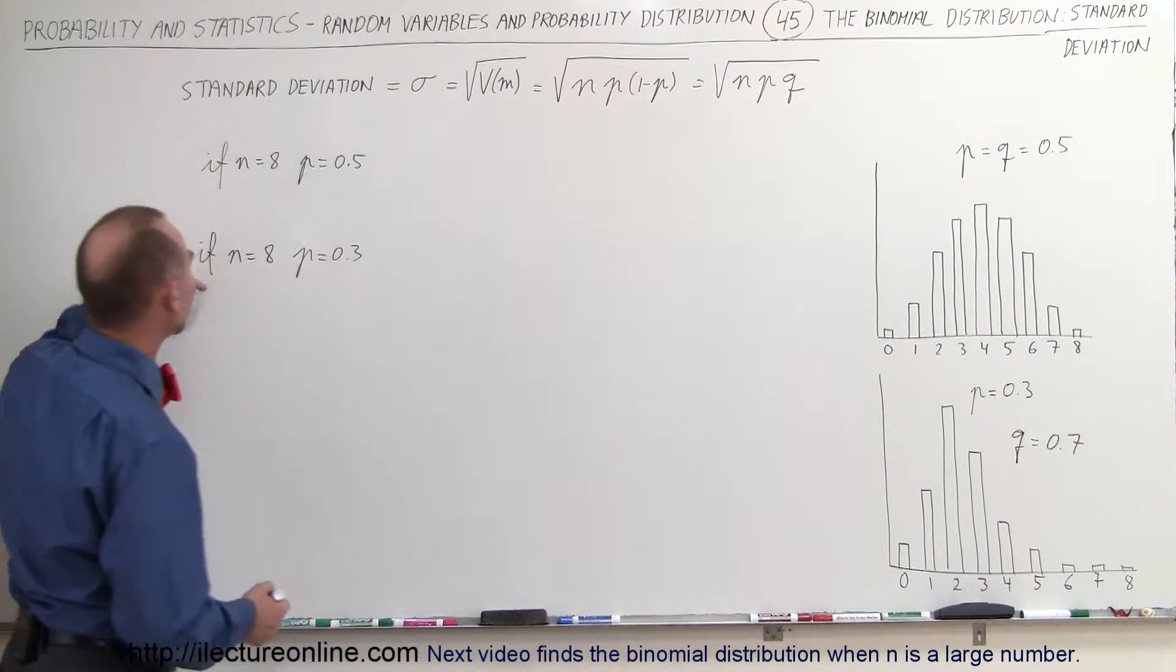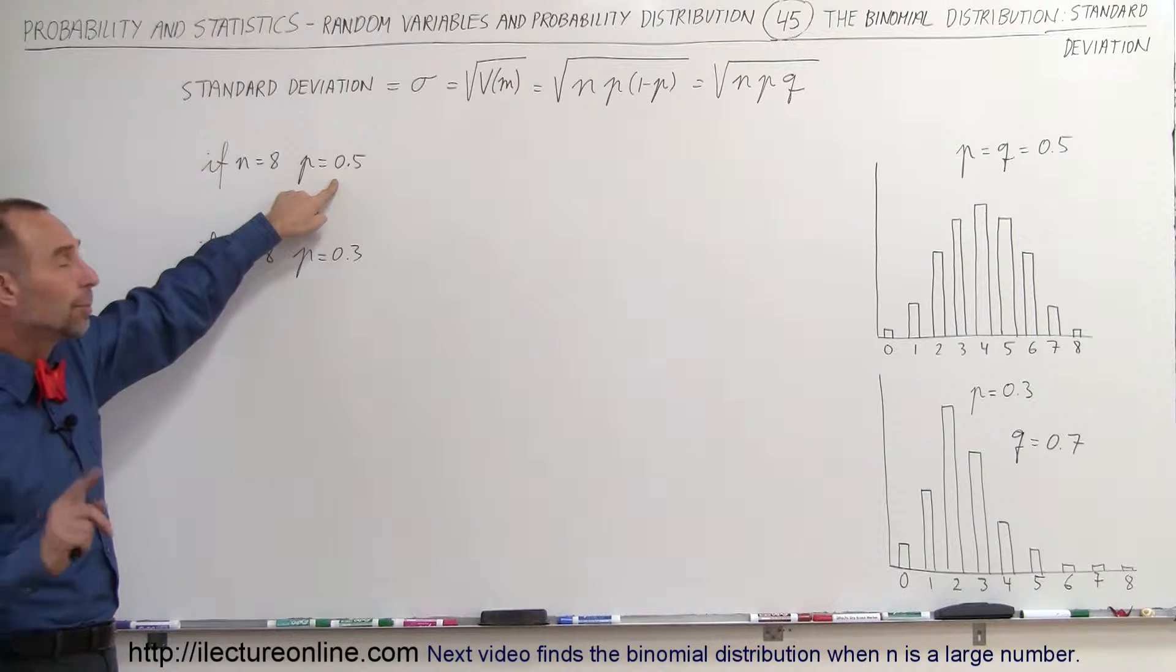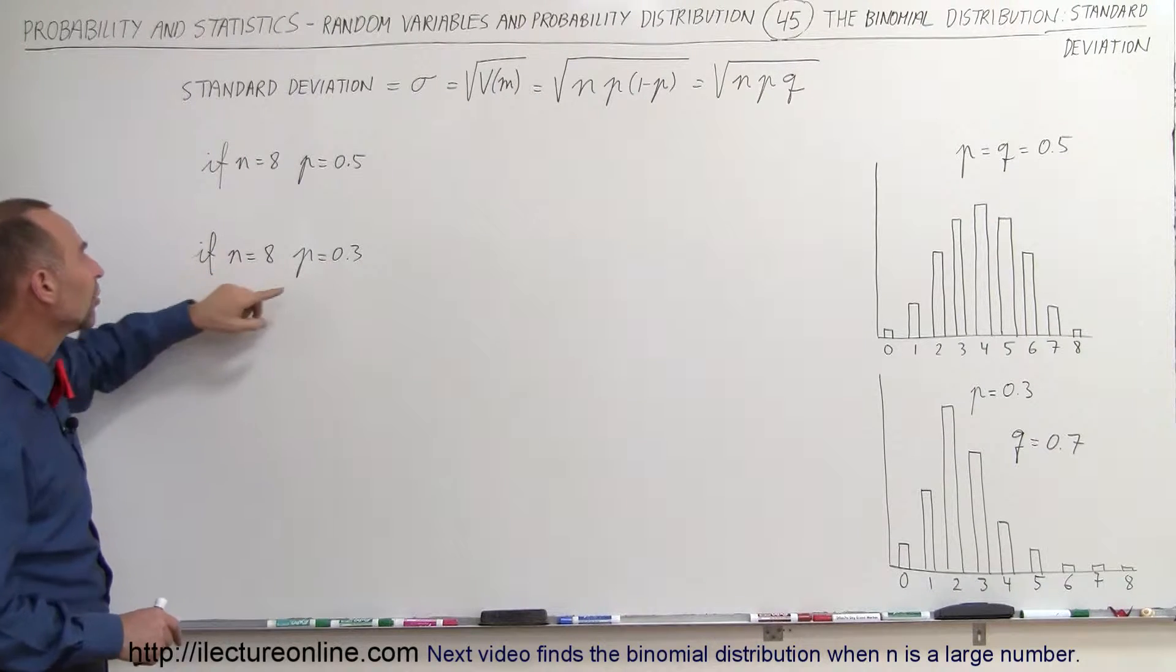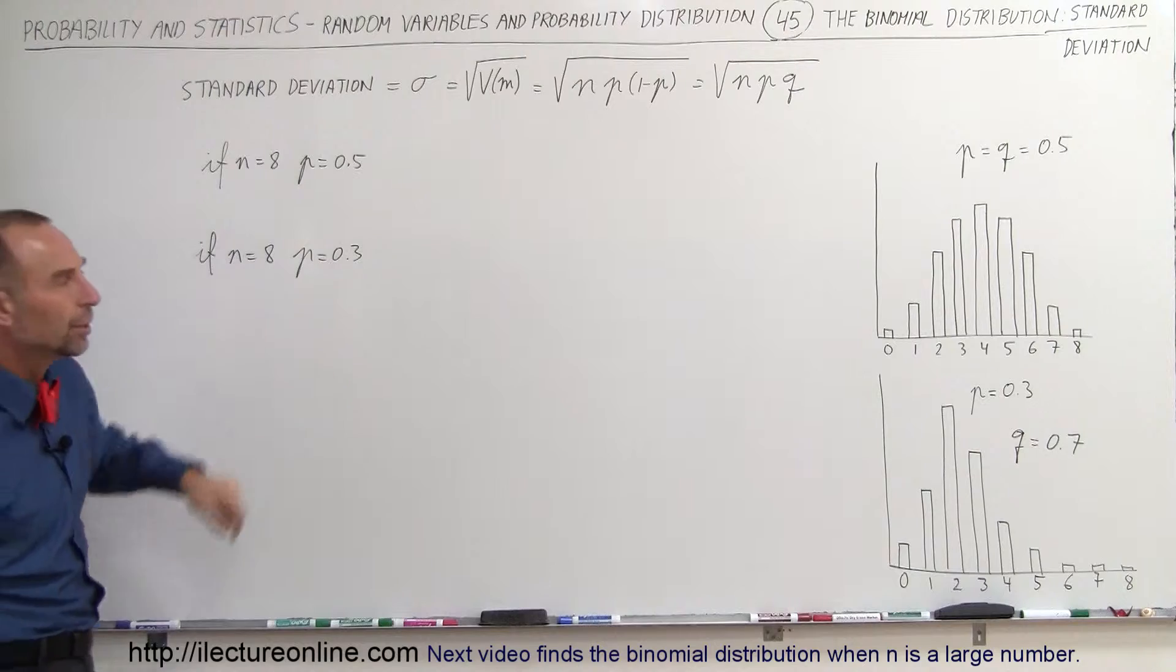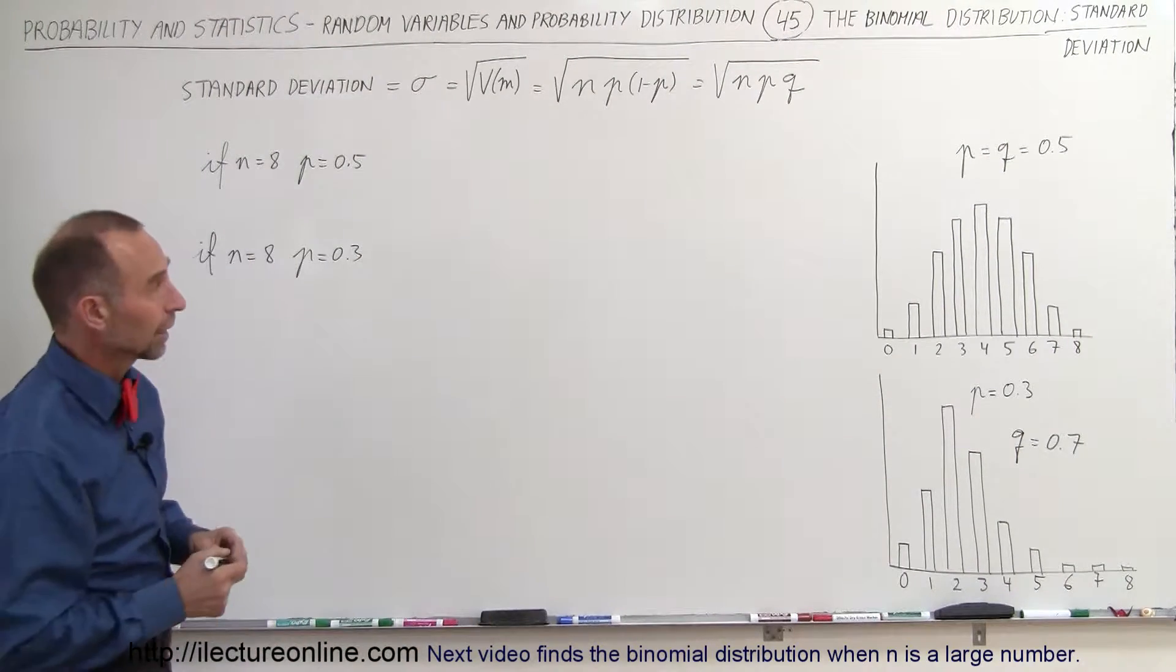So when we have the two examples right here with eight trials, first we're going to try with the probability of success equal to 0.5, and then eight trials with the probability of success equals 0.3. Here you have the graph distributions of what those look like.